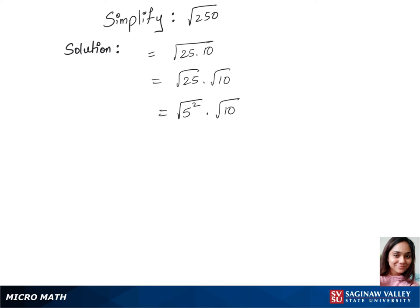Now the square and square root get cancelled, and we are left with 5 times root 10. And that's our final answer.